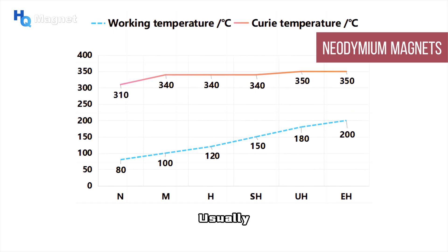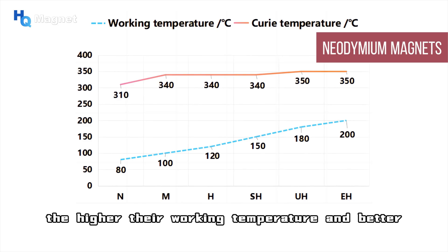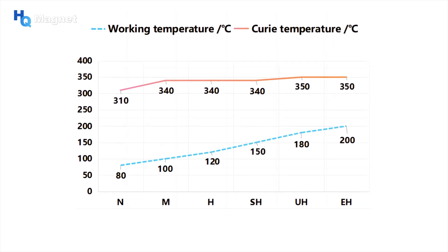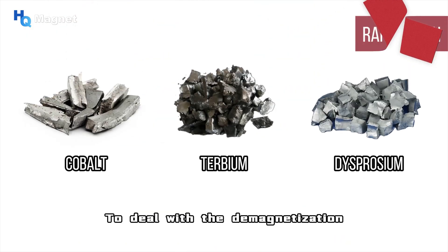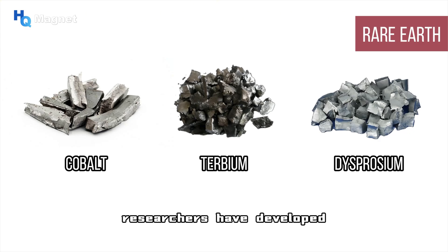Usually, the higher the Curie temperature of magnetic materials, the higher their working temperature and better temperature resistance. To deal with the demagnetization phenomenon of neodymium magnets under high temperatures, researchers have developed high-temperature-resistant magnets.